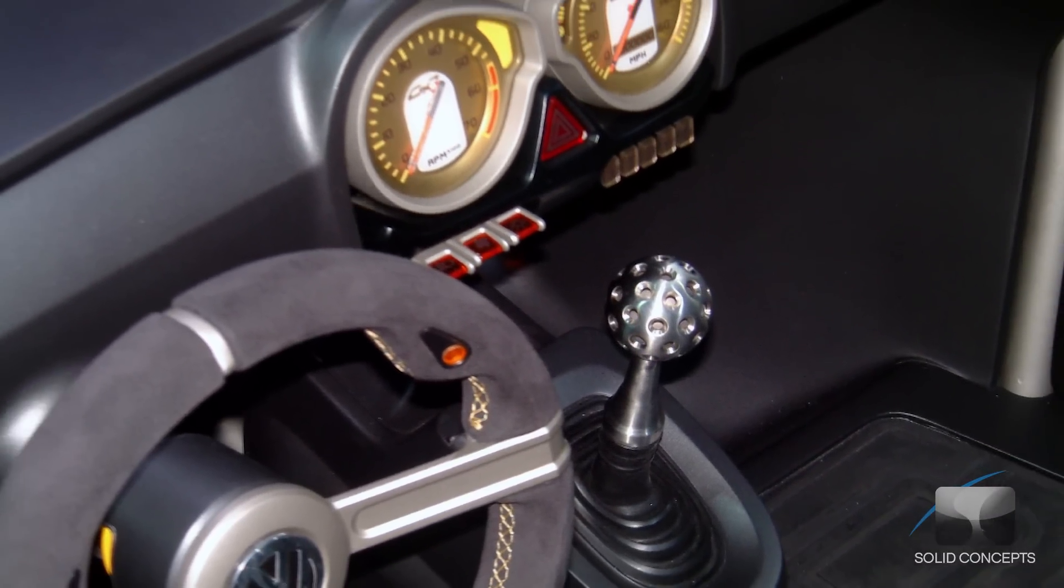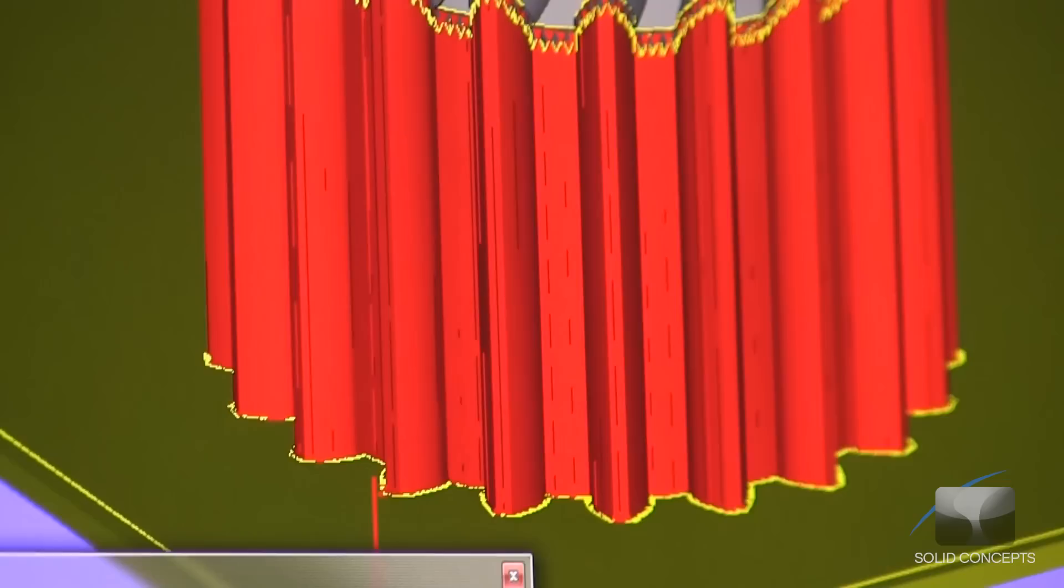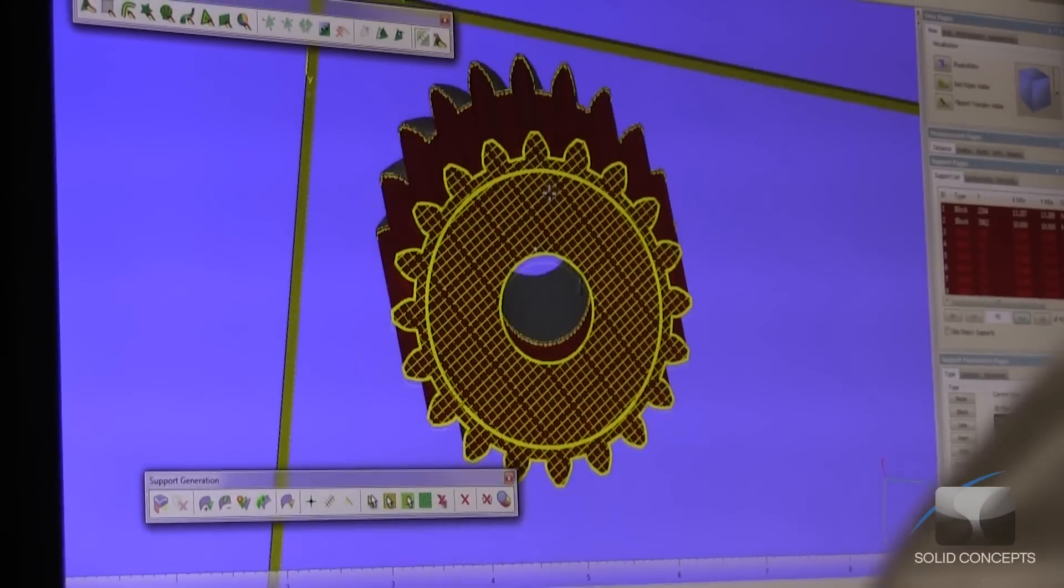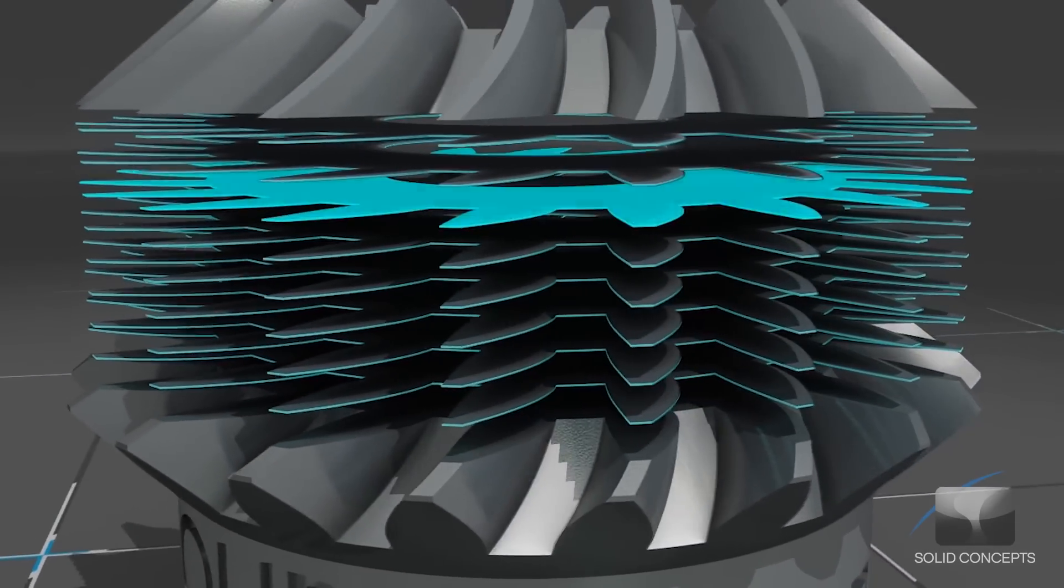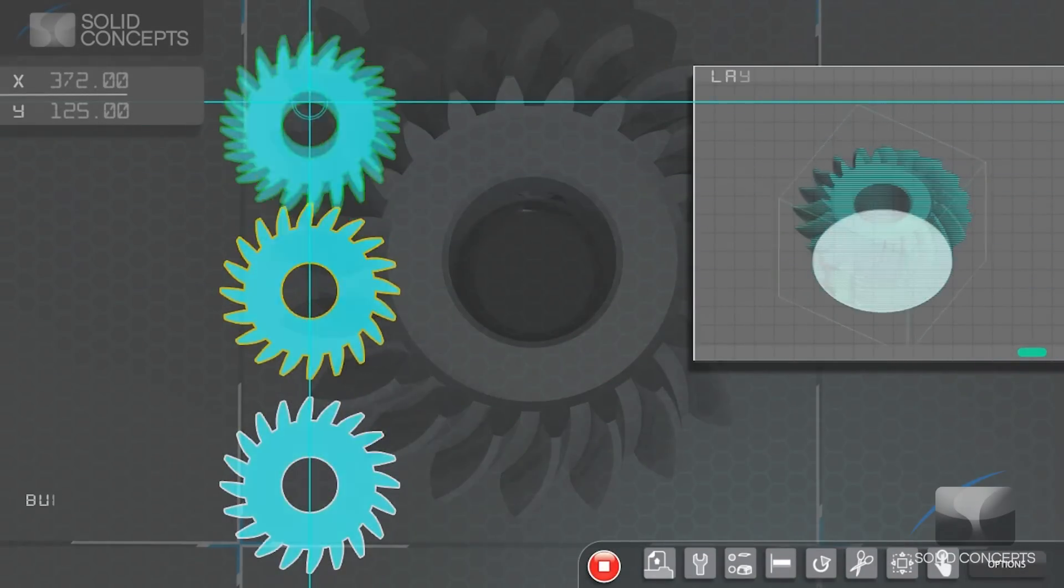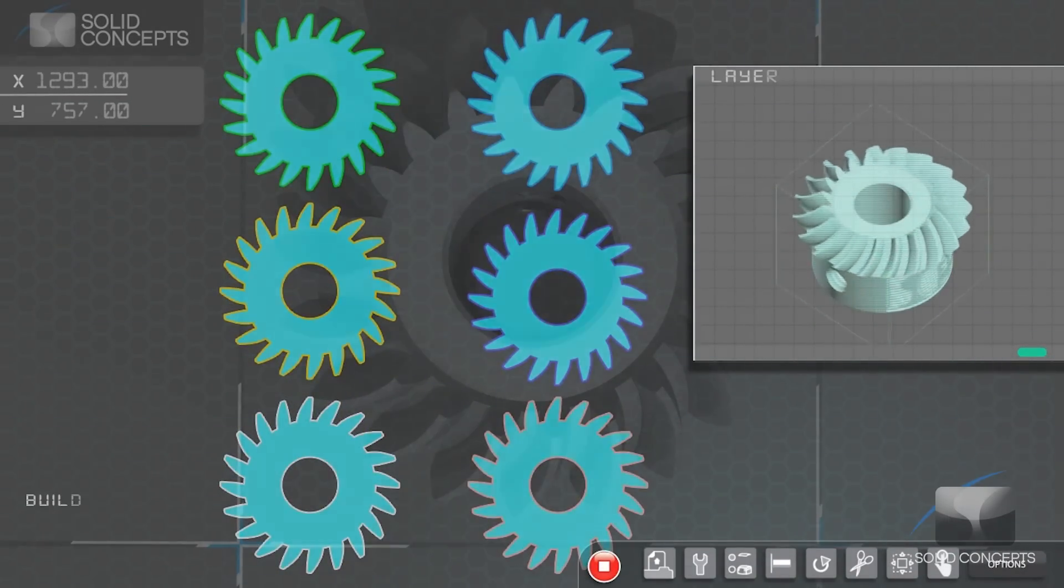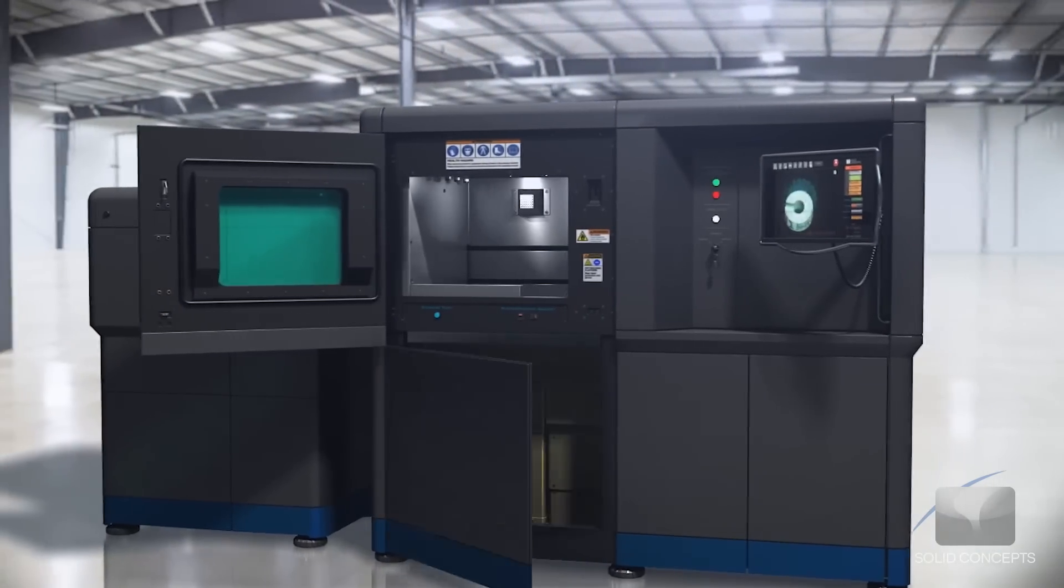The DMLS process begins in the same fashion as other layer additive manufacturing technologies. A program takes 3D CAD data and mathematically slices it into 2D cross sections. Each of these sections will act as a blueprint telling the DMLS machine exactly where to sinter the metal material. The data is then transferred to the DMLS equipment.